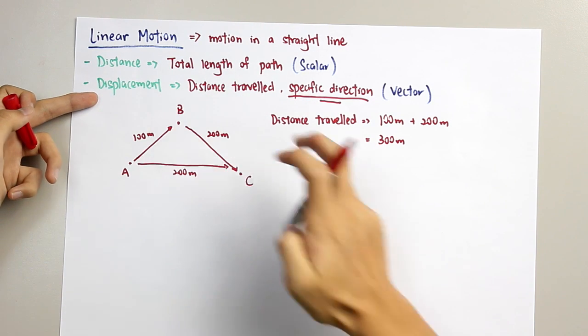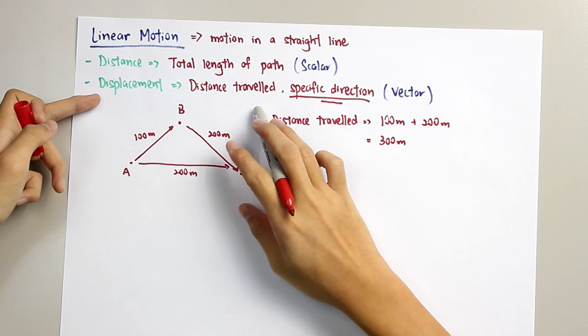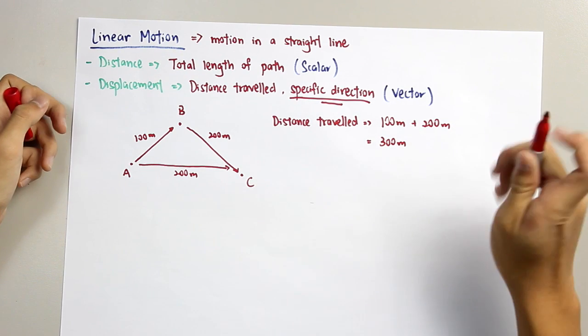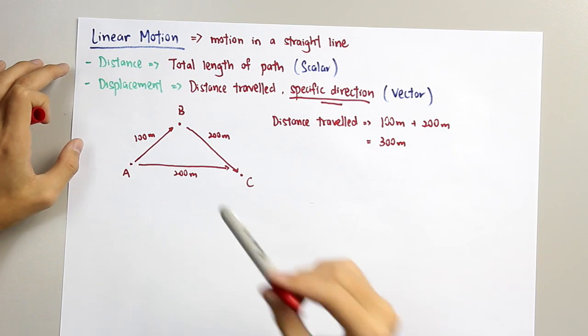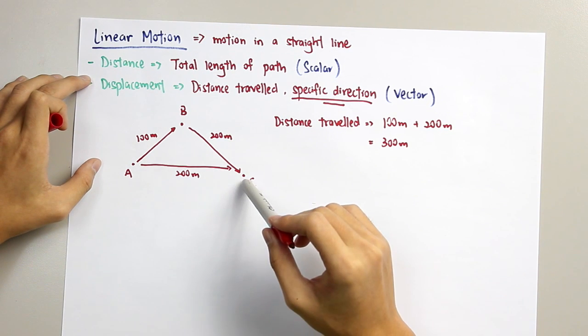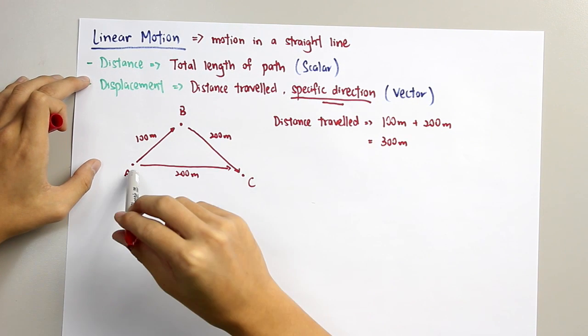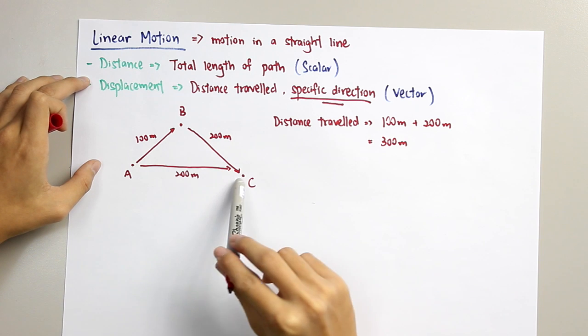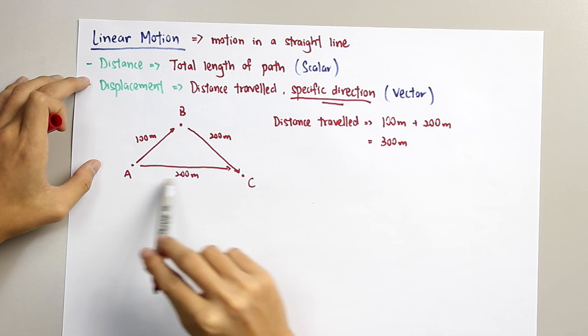However, for displacement, we mentioned that it's a distance traveled in a specific direction. Which means that when you need to calculate the displacement traveled from A to C, you have to give only this direction, only one direction.